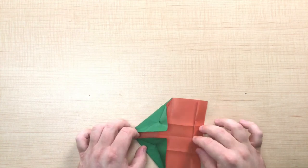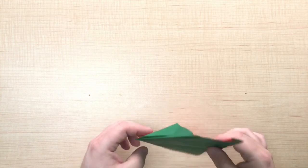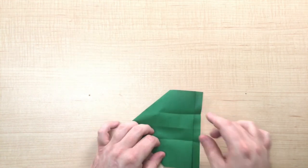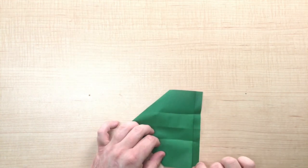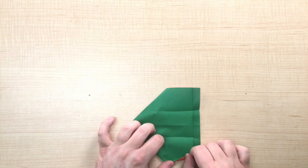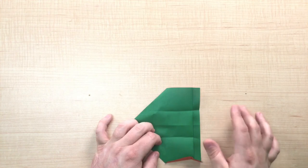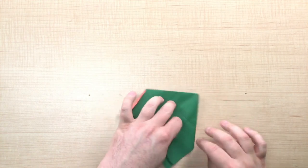From here we want to further define the legs. So flip your origami over and with this flap here slightly fold it in at an angle. Like so. And then repeat on the top side.